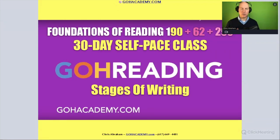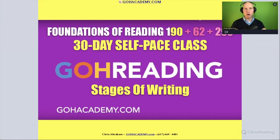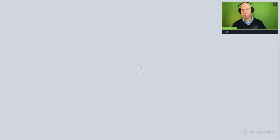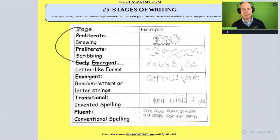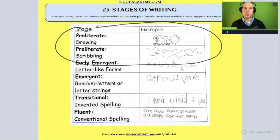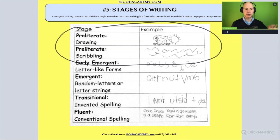Stages of writing. In this section, I want to look at the developmental levels involving writing, and we're going to look at four major areas. There's going to be the pre-literate stage — this is the stage where you're going to see a lot of scribbling and drawings.